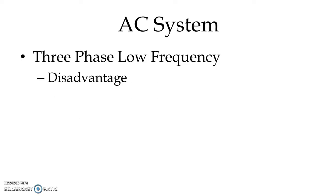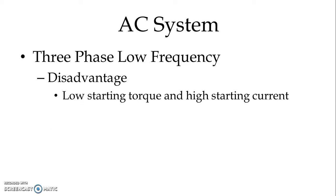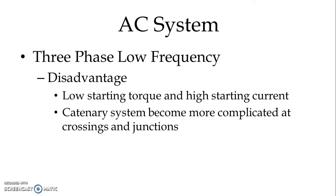There are certain disadvantages in the three phase low frequency system. Because a three phase induction motor is used, starting torque is low and starting current is high compared to DC traction motors. The catenary system becomes more complicated at crossings and junctions. The reduced supply frequency requires a frequency converter substation, which ultimately increases the overall cost.